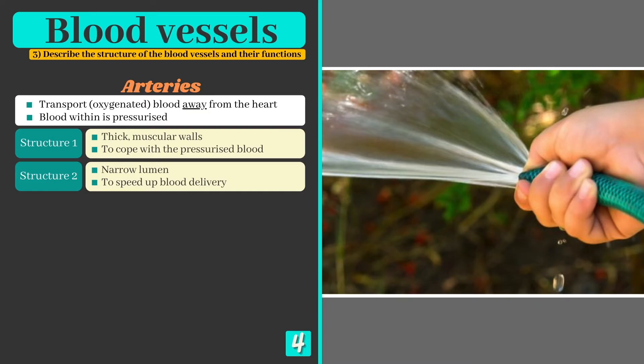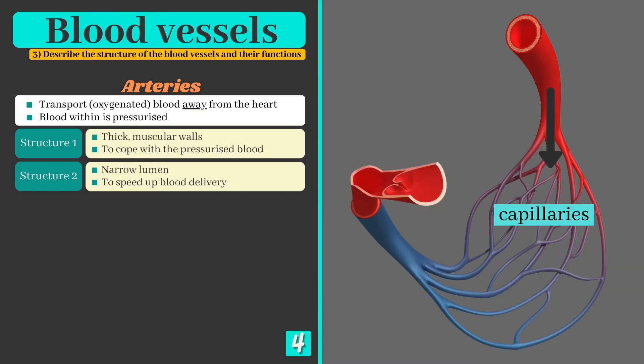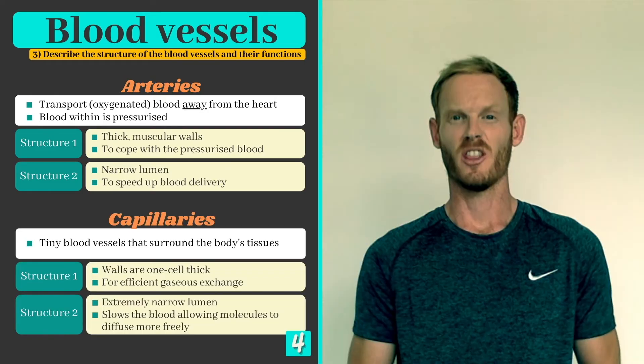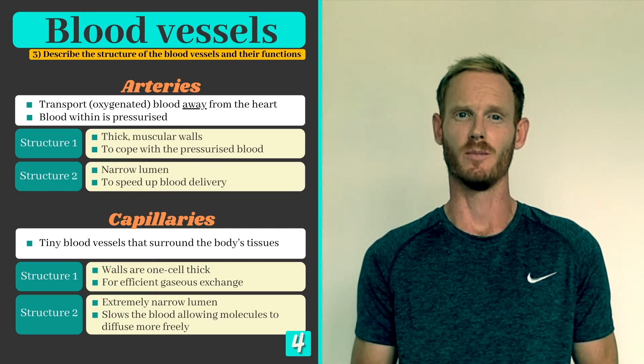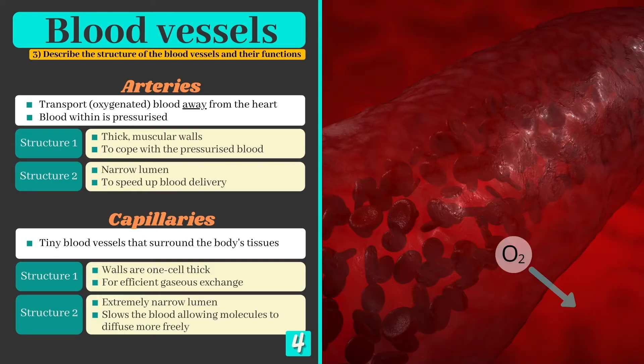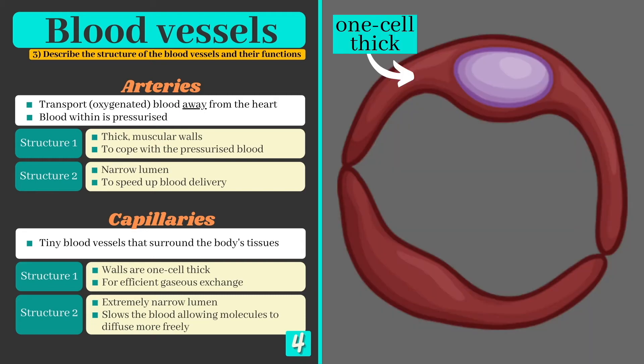Once the blood reaches a tissue such as a muscle, the arteries branch off into tiny blood vessels called capillaries. The primary role of these vessels is to allow nutrients, gases, and waste products to move from the blood and into the cells and vice versa. To support this function, they have extremely thin walls, one cell thick in fact, and a very narrow lumen that serves to slow the blood down, allowing molecules to diffuse more efficiently.